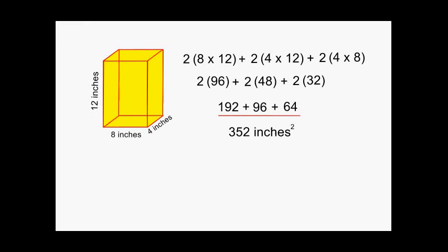So it would take 352 square inches to completely cover all six surfaces of this particular rectangular prism.